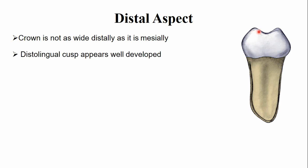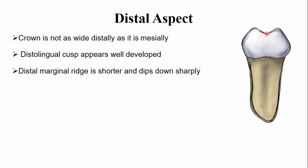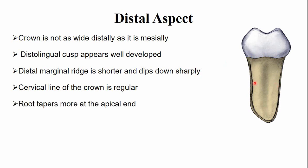The disto-lingual cusp appears more well-developed compared to the disto-buccal cusp. The distal marginal ridge is short and has a dip. Like the mesial side, the cervical line is nearly straight and regular. The bucco-lingual width of the root is less on the distal side, especially in the apical area. The taper of the root is more pronounced, and because of this taper and the reduced bucco-lingual width, part of the mesial root is also visible from the distal aspect.